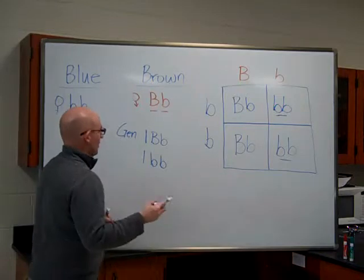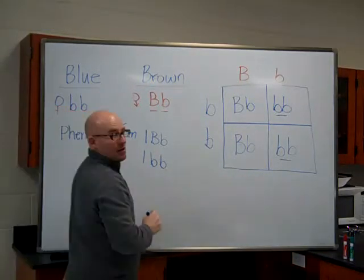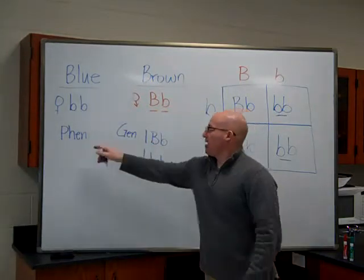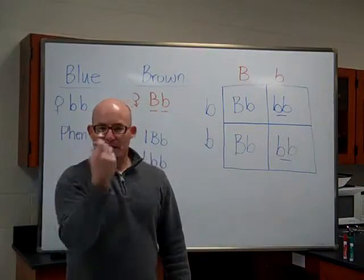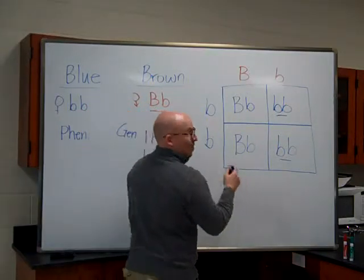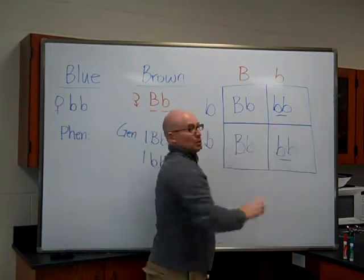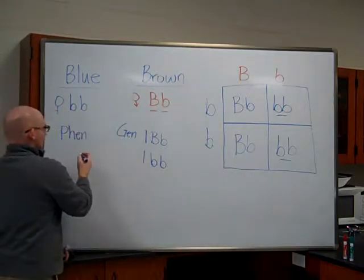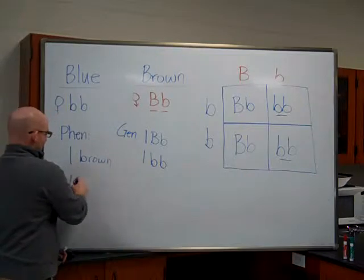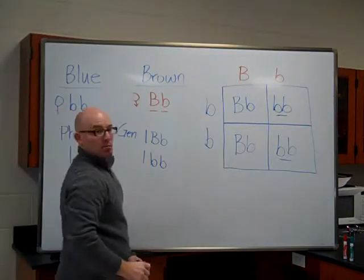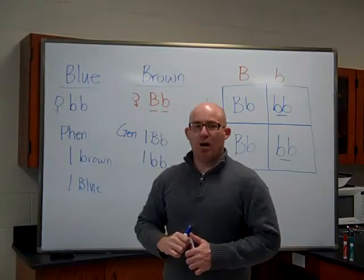Now if we said, what are the possible phenotypes? What are the possible phenotypes of the offspring? Now remember, phenotype means the actual trait that I observed. I have a probability of having 50% brown eyed offspring and 50% blue eyed offspring. So my possible phenotypes are for every one brown, I would expect to have one blue. So those are an example of some of the questions we could ask from that simple problem.